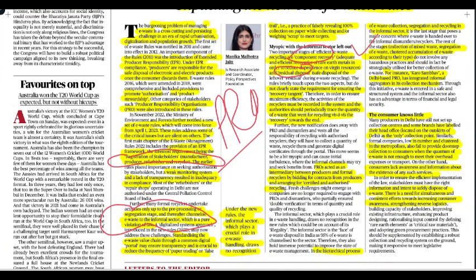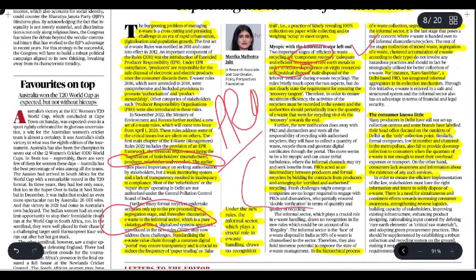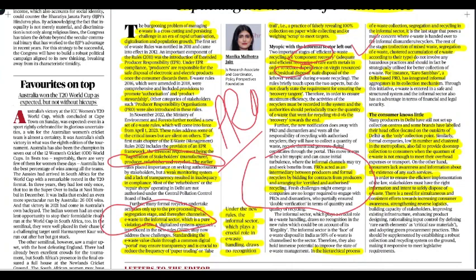To work properly, PROs need clear-cut responsibilities. The Producer Responsibility Organization will be an intermediary between producers and formal recyclers. If PROs bid contracts from producers and arrange certified authorized recycling, that will be a good outcome. Fresh challenges can emerge because companies are no longer required to engage with PROs and dismantlers, possibly leading to double verification for quantity and quality of recycling. The informal sector plays a crucial role in handling e-waste but has no recognition in the new rules and is counted as illegal, despite 95% of e-waste being channelized through this sector.